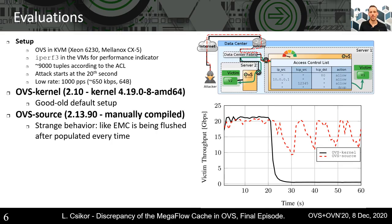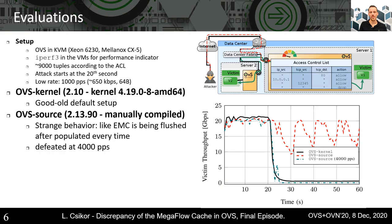We verified this behavior by spawning two new VMs in the system and replaying a different traffic trace much faster between them to populate the EMC. We observed the same behavior, so there should be something else in the background. We then tried to simply increase the traffic rate until we observed what we expected. The rate was found at 4,000 pps where the performance of single-core OVS drops down to zero. Note this attack rate is still around 2.5 Mbps, which is still very low.